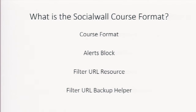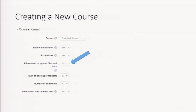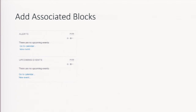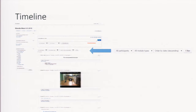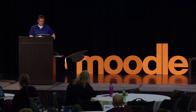The Social Wall course format includes an alert block, a filter URL resource, and a backup helper — all available in the repository. When you select the course format there's one key option: allow users to upload files and links, which you can toggle on or off. You can set how many posts to show at a time, and the main format is a timeline view, just like a Facebook page — sortable by mod type or alert, in ascending or descending order.